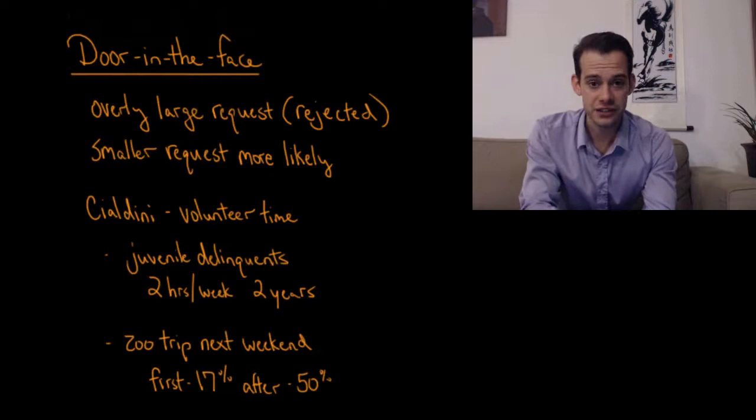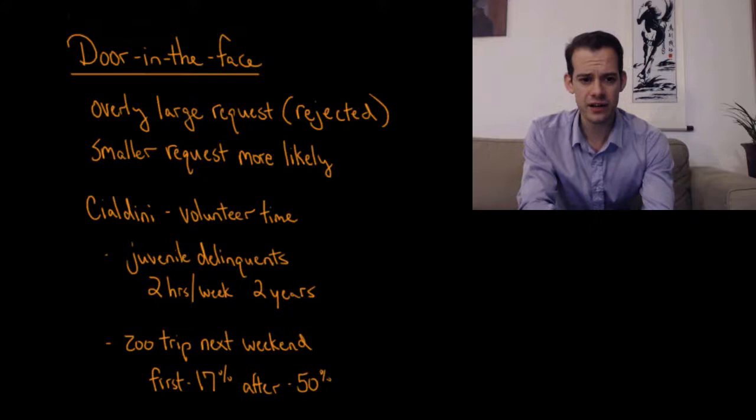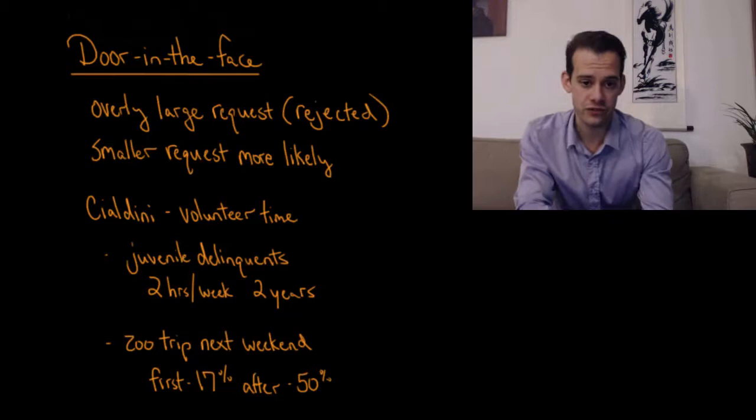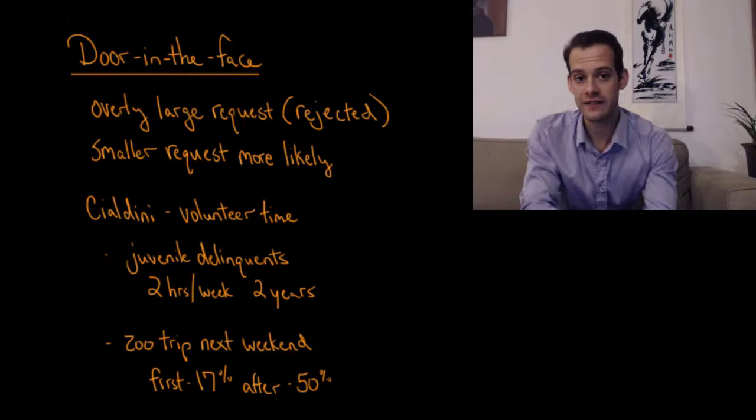If they started with the zoo request initially, they found that only about 17% of people accepted this request and said yeah I'd be willing to volunteer my time to go to the zoo with these juvenile delinquents and be a chaperone. But if they started with the very very large request of two hours a week for two years and then they asked about the zoo trip, they found that 50% of participants were willing to go on this trip to the zoo. So this showed that the door-in-the-face technique was able to increase the acceptance of this request.